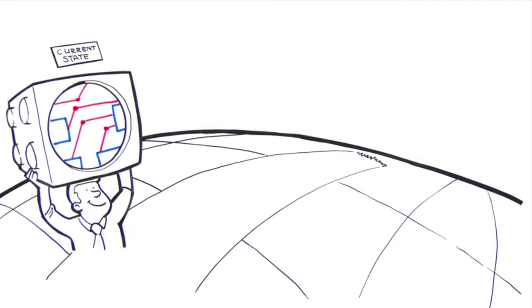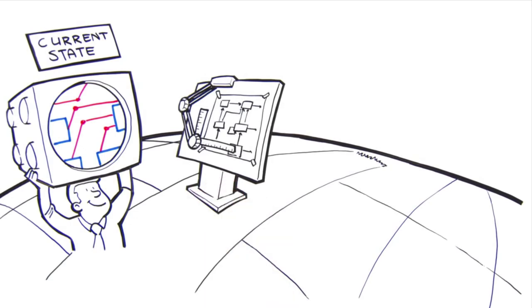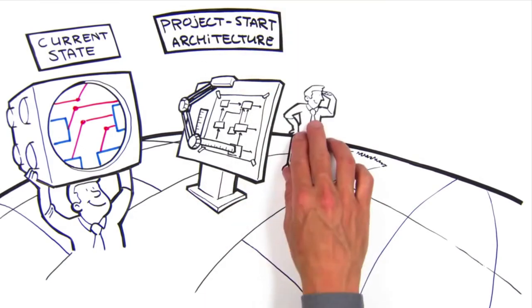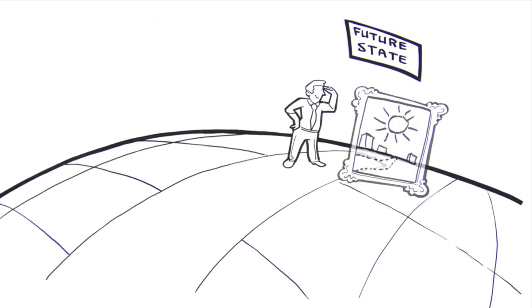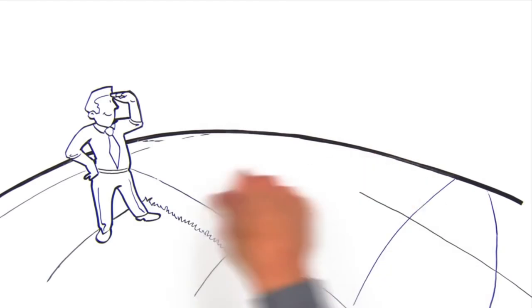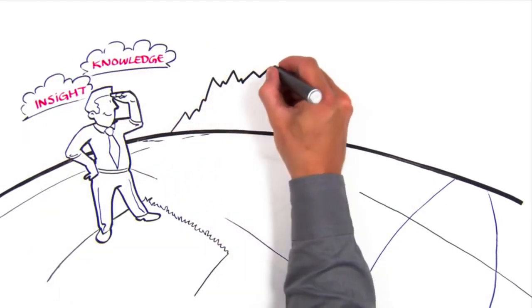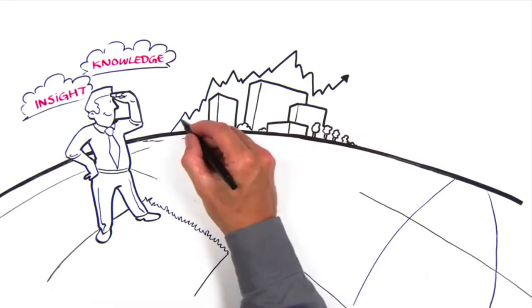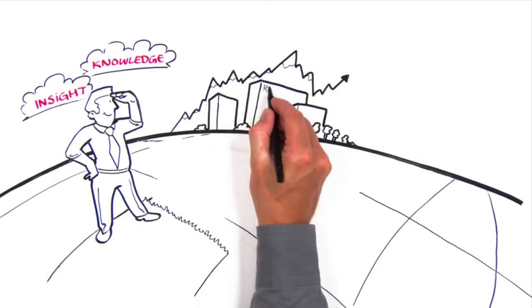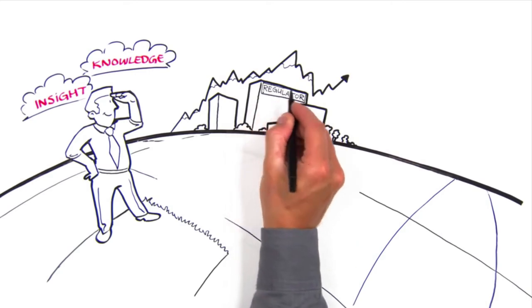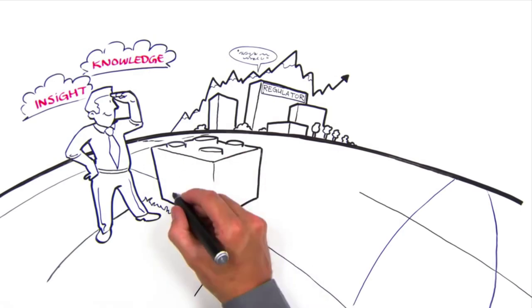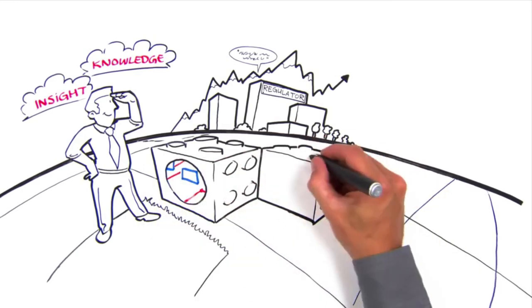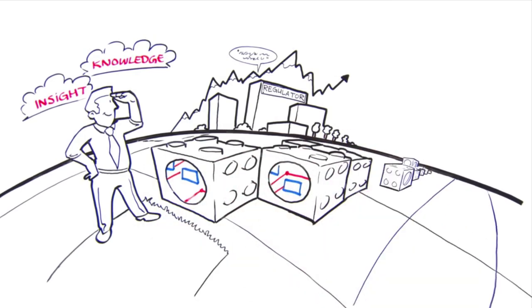To summarize: enterprise architecture is all about the current situation, the development and evaluation of designs, and creating a sketch for the future — a single view of the strategy of the organization. Architecture is really only and always about insight and knowledge. The world is unpredictable and we can't anticipate what regulations will come up or what happens three years from now. In the end, architecture is all about maintaining our ability to change.